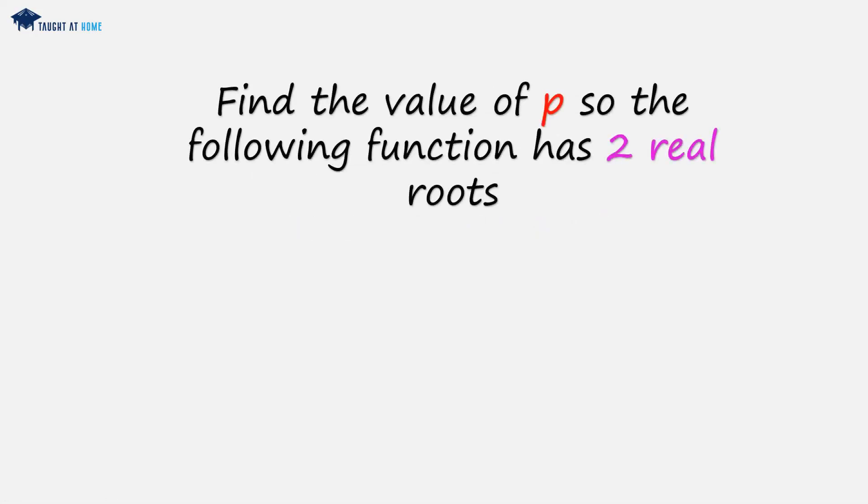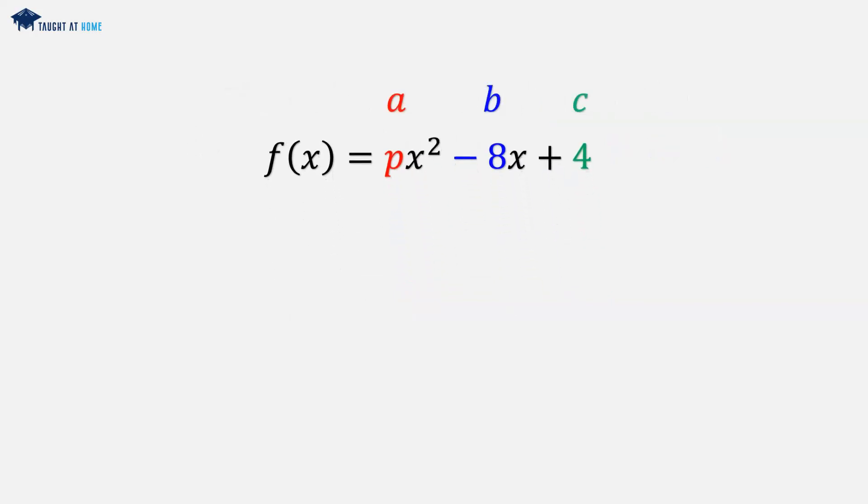Example 3: Find the value of p so the following function has two real roots. f(x) = px² - 8x + 4. Again, we'll highlight our a, b, and c values. For two real roots, we want b² - 4ac to be greater than 0.